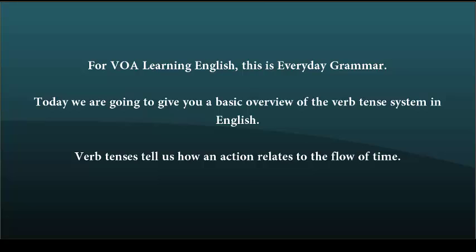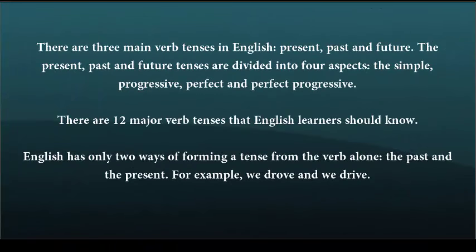Verb tenses tell us how an action relates to the flow of time. There are three main verb tenses in English: present, past, and future. The present, past, and future tenses are divided into four aspects: the simple, progressive, perfect, and perfect progressive.